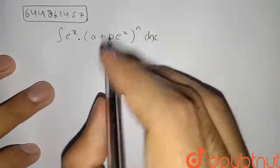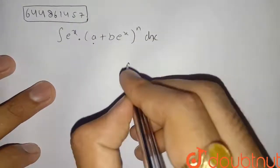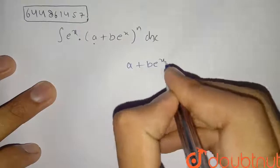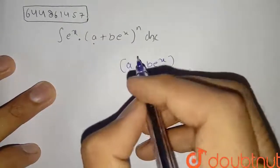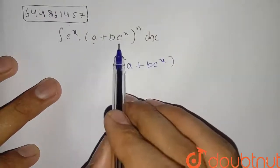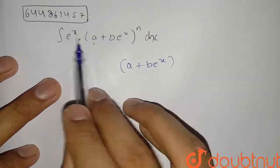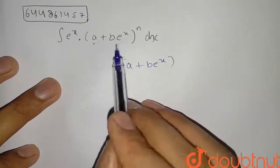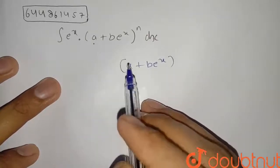It's a very easy question. What I am substituting is this a plus b e raised to x. Clearly we can see that if I take this value as t, so if we differentiate then we can find value of e raised to x dx from it and we can replace it to make our integral easy.